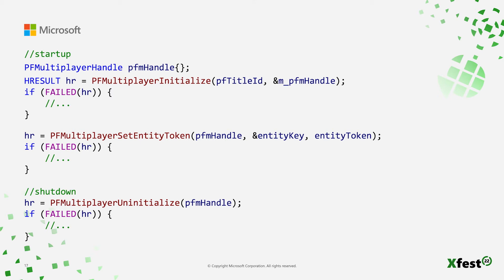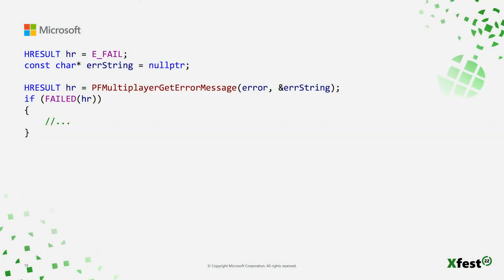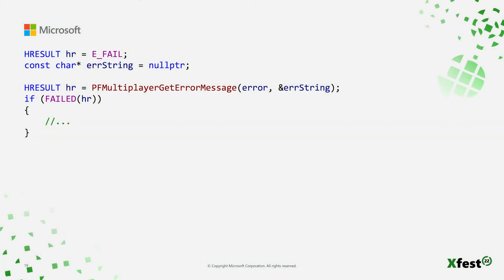When shutting down, make sure to clean up PlayFab Multiplayer by passing the multiplayer handle into the uninitialized function. The GetErrorMessage function can be used to get a human-readable error message for any PlayFab Multiplayer function that returns an HResult. For the remainder of this presentation, any time you see an HResult returned from a function, there should be an IfFailed check immediately afterwards.